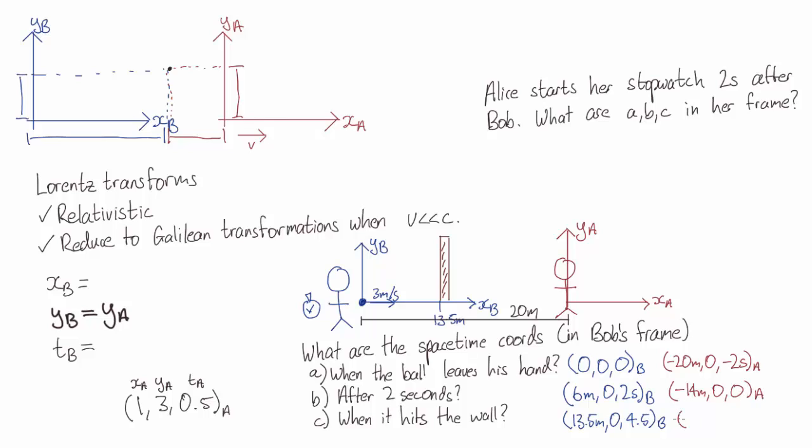Lastly, when it hits the wall, that event occurs 6 and a half meters behind Alice, so minus 6.5, and 2.5 seconds after the time Alice calls t equals 0.